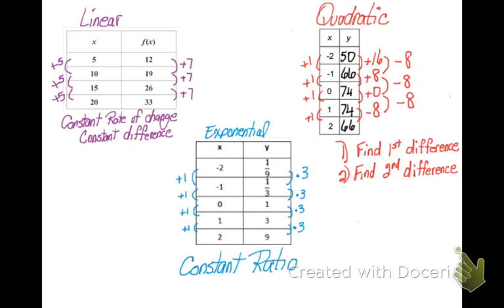So find the second difference. If you have a constant second difference, then your table models quadratic functions.